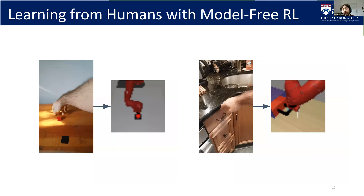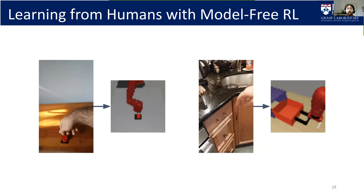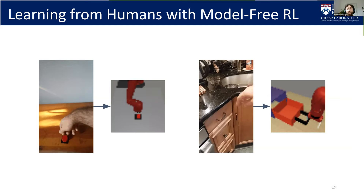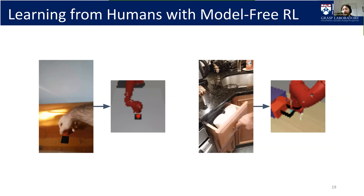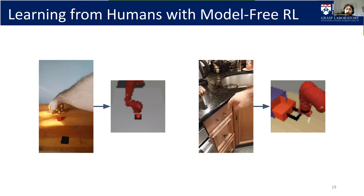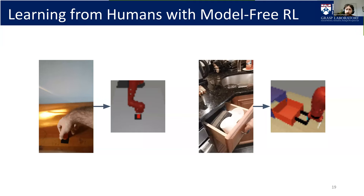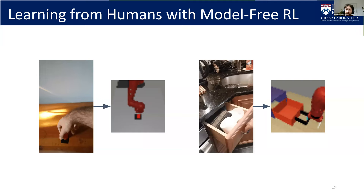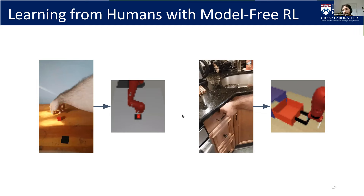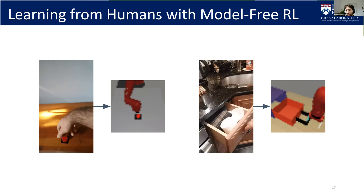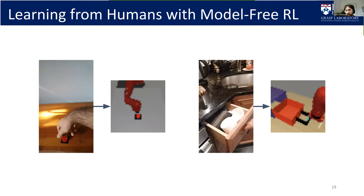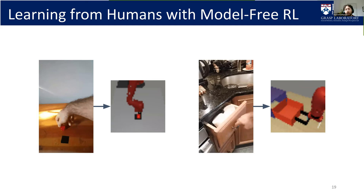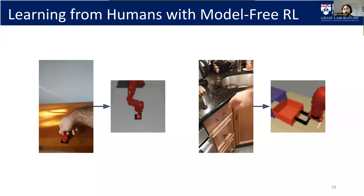This was a fairly successful start, but there are problems with the previous formulation. Video prediction is a very difficult problem, and relying on pixel-level predictions makes it hard to handle large domain gaps between human and robot data. If we want to move out of the lab and collect data from people performing tasks in their homes, we need a different approach. So in the next work, I investigated how to learn from humans using model-free reinforcement learning.